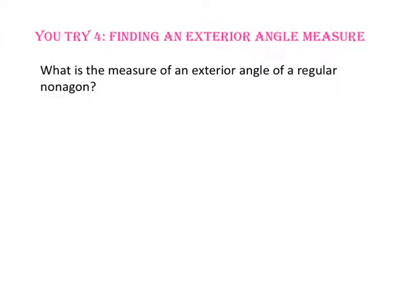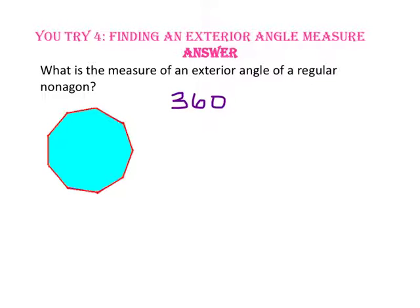Pause the video and do you try number 4. What is the measure of an exterior angle of a regular nonagon? The sum of the exterior angles of any polygon is 360 degrees. Since a regular polygon has congruent exterior angles and a nonagon has nine sides, we divide 360 by 9, which gives us 40 degrees. So each exterior angle of a regular nonagon is 40 degrees.